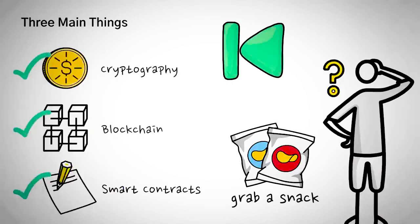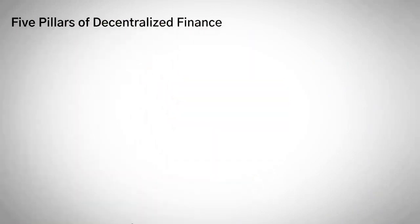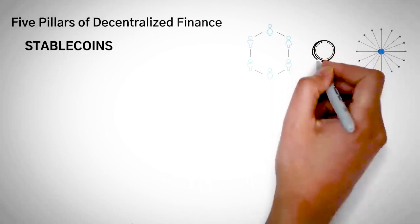Number one: stablecoins. So first off, we need to understand the bridge of decentralized finance to centralized finance, and that is cryptocurrency that is matched to a real world asset.